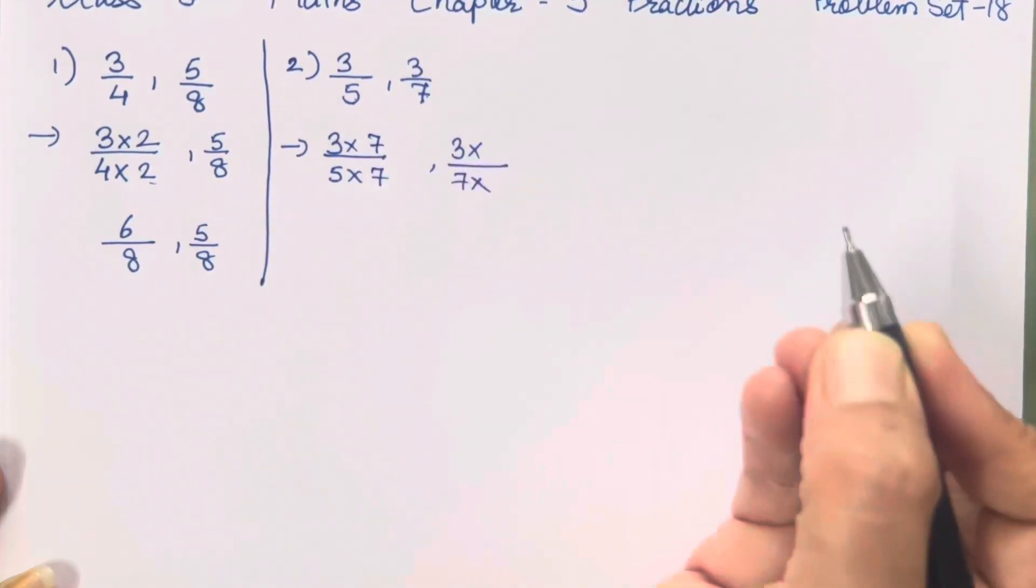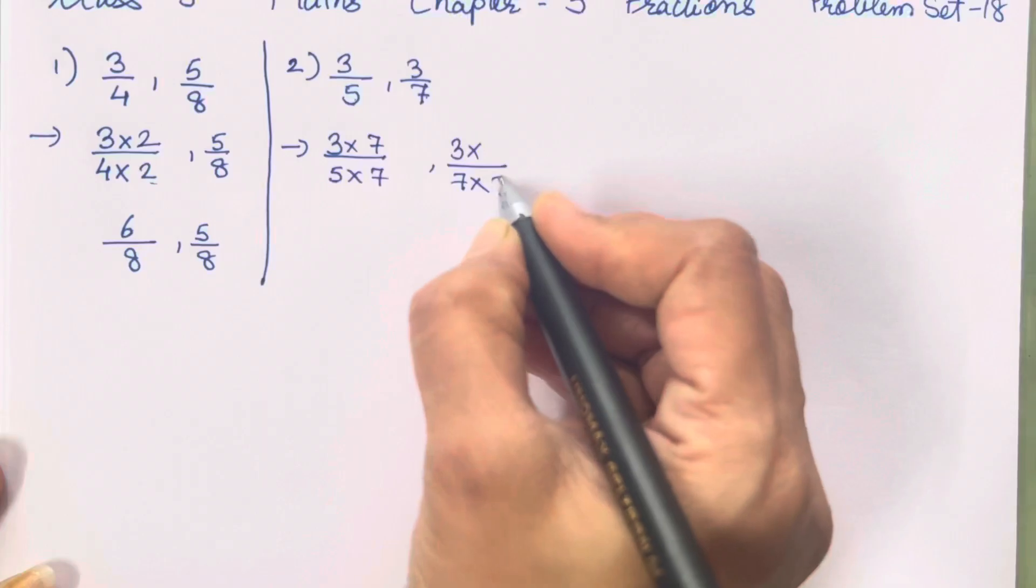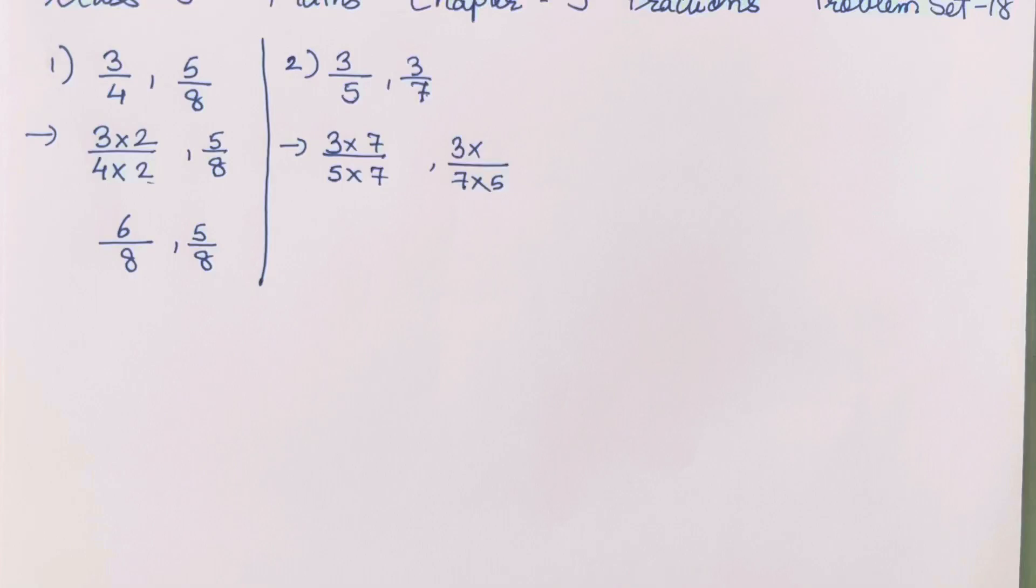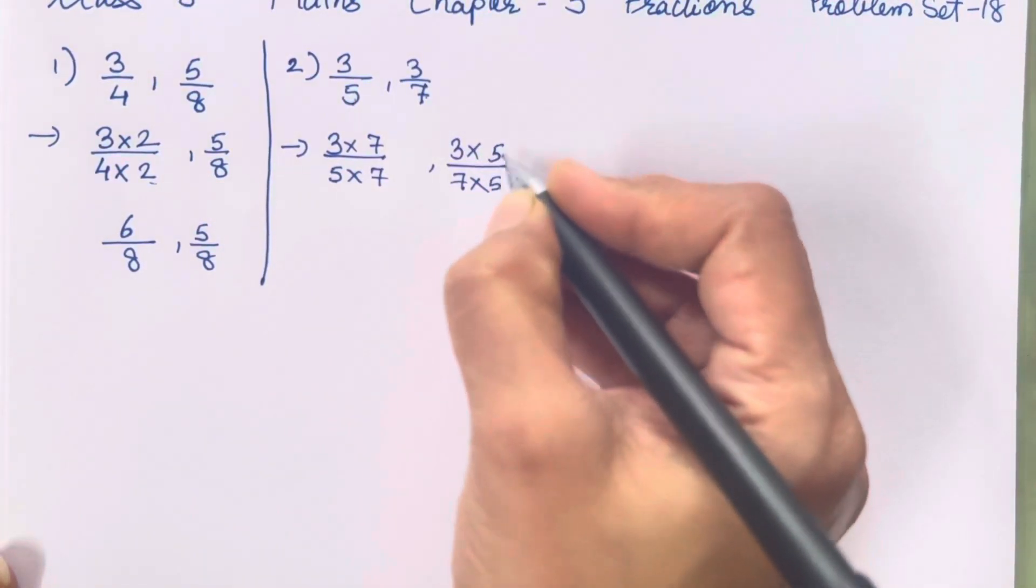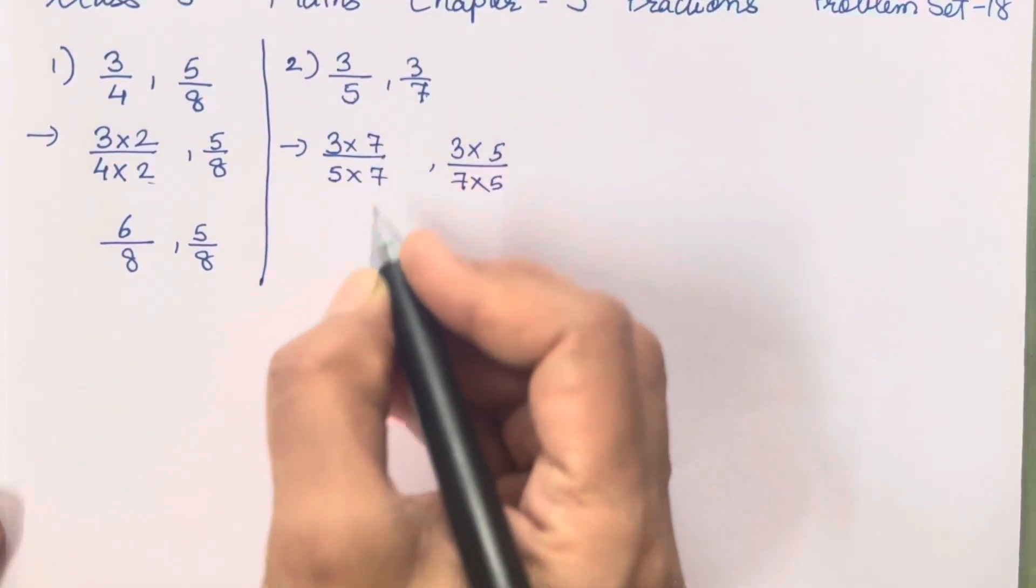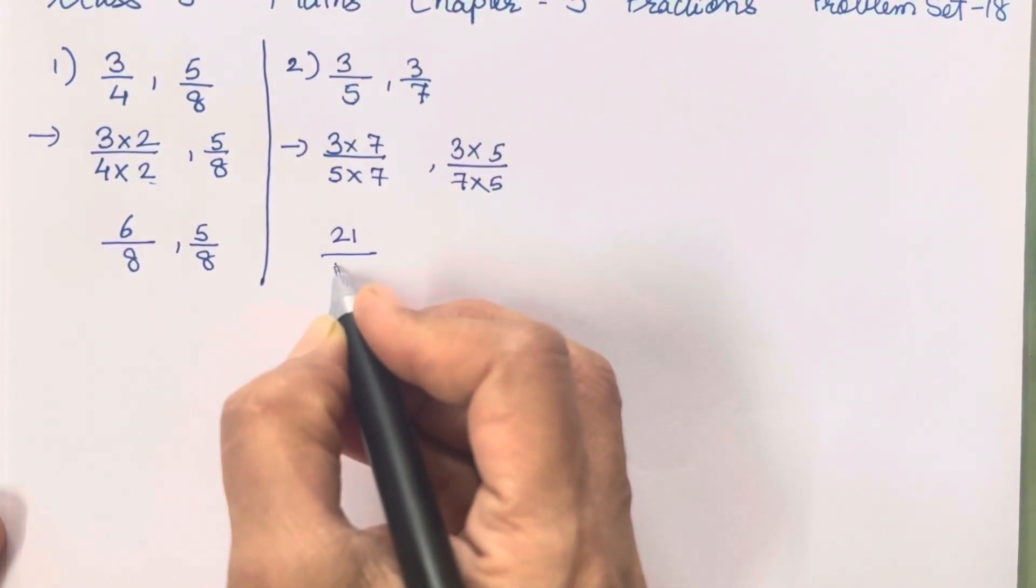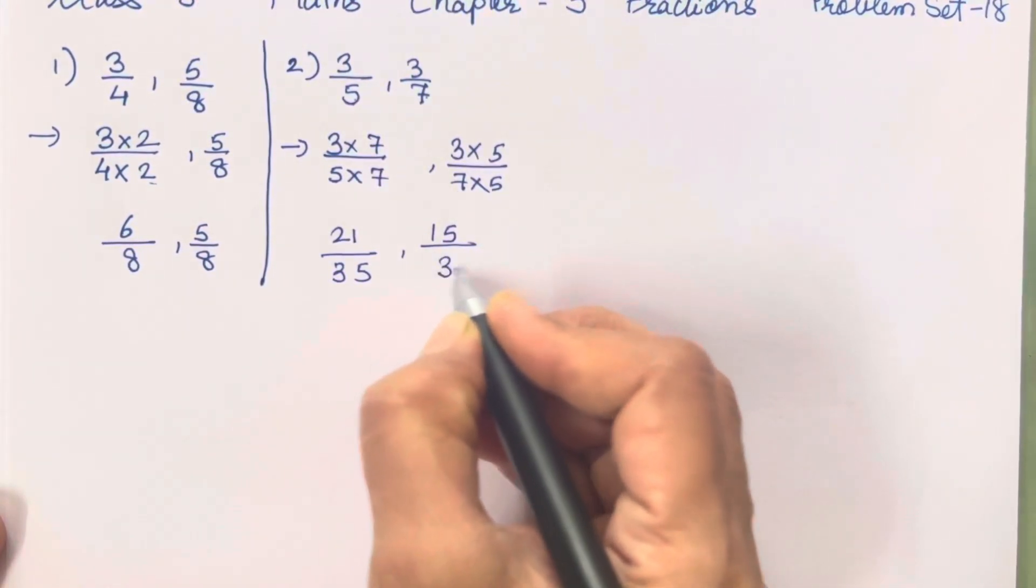Now over here also, numerator and denominator should be multiplied with the same number. Now 3 7s are 21, 5 7s are 35. 3 5s are 15, 7 5s are 35.